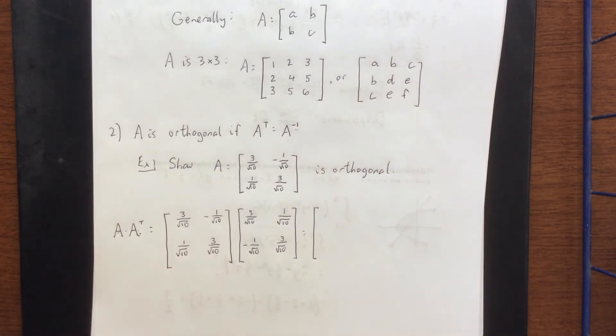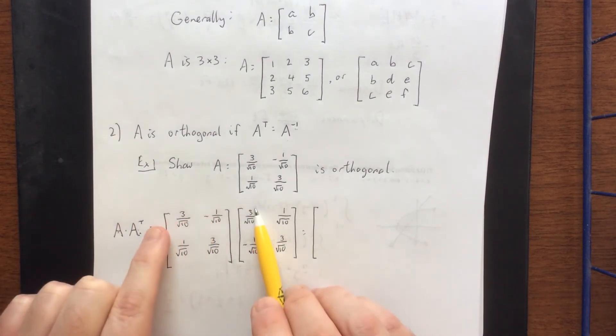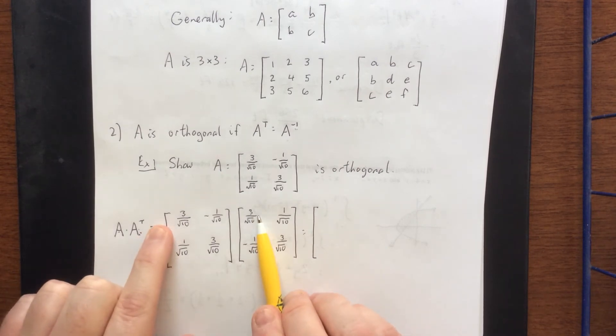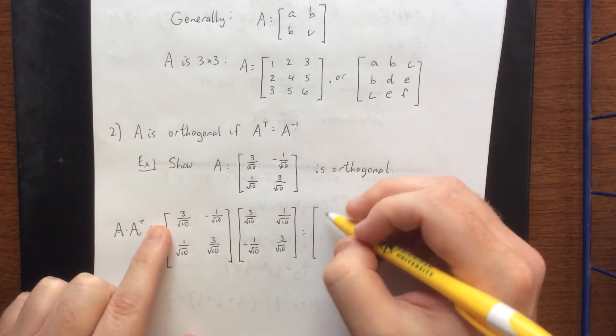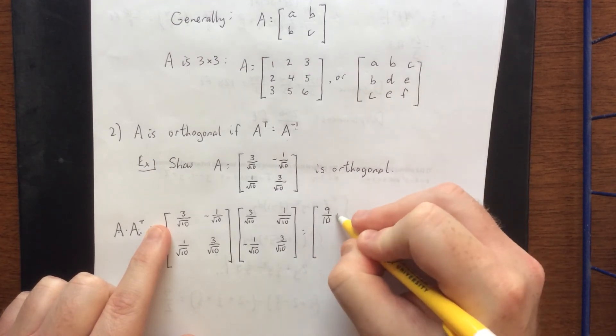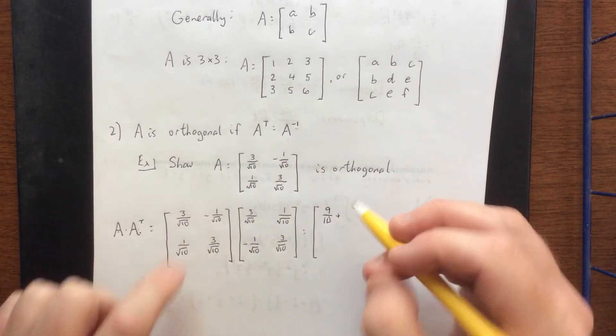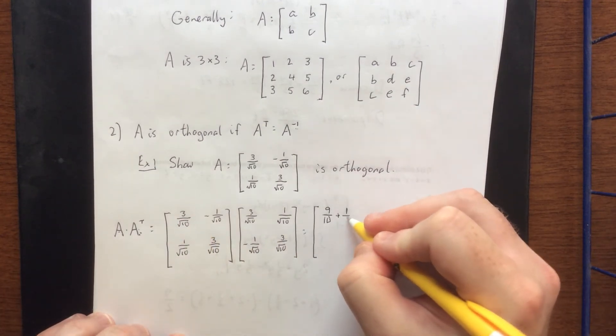Now with that in mind, we multiply the corresponding components together and add appropriately. So going across the first row and down the first column, we multiply these entries together. So 3 over the square root of 10 times 3 over the square root of 10 would be 9 over 10, plus negative 1 over the square root of 10 times negative 1 over the square root of 10 would be positive 1 over 10.